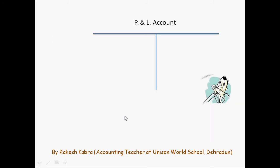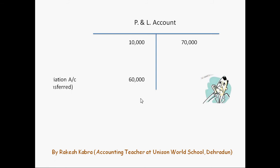Let's take one example. This is our P&L account and total of its debit side is 10,000, total of its credit side is 70,000. So this P&L account will reveal net profit of 60,000 and now in order to distribute this 60,000 among the partners, we will transfer this 60,000 to the profit and loss appropriation account.